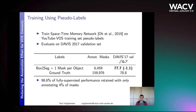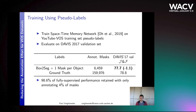Next we consider what happens when we do training using the pseudo-labels. We use the space-time memory network by Oh et al. 2019 and train it on the YouTube VOS training set using our pseudo-labels, then evaluate on the Davis 2017 validation set. Using all annotated masks of the original YouTube VOS dataset achieves 78.8% J and F score. When annotating only one mask per object and using pseudo-labels, we achieve 77.7% — only 1.1 percentage points lower — meaning with 4% annotation effort we reach 98.6% of the fully supervised performance.